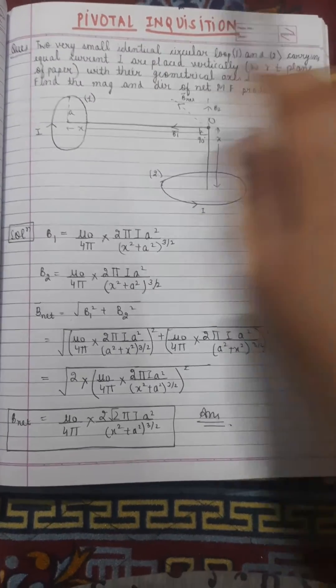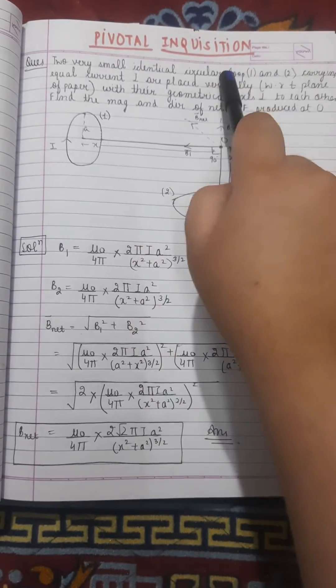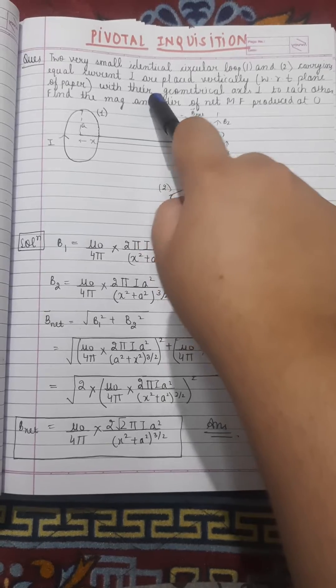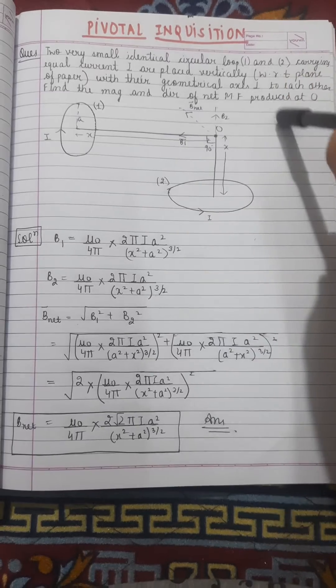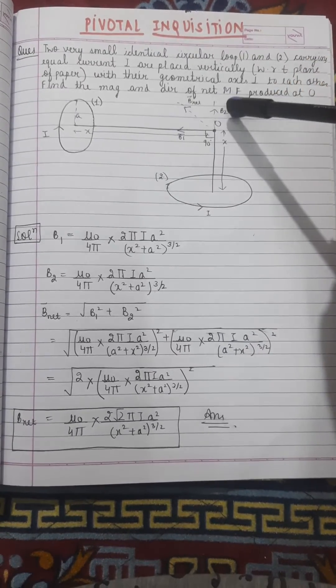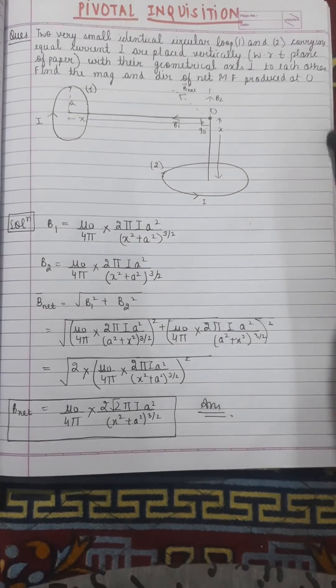The question says: two very small identical circular loops, one and two, are carrying an equal amount of current i and are placed vertically with respect to the plane of paper with their geographical axes perpendicular to each other. Find the magnitude as well as the direction of net magnetic field produced at O.